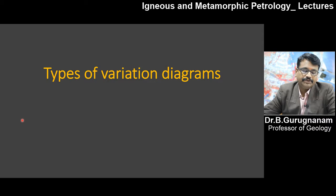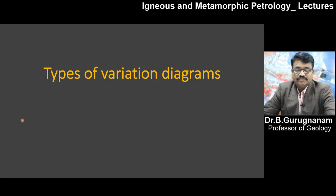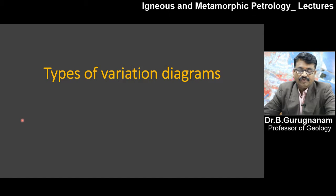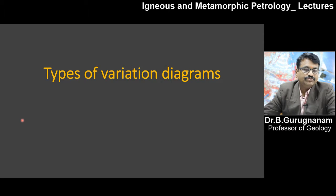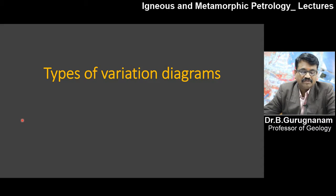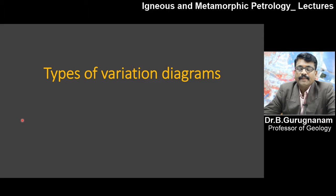Welcome back to a lecture series on igneous and metamorphic petrology. Since the last few classes, we have seen the general igneous rocks — how they are formed from magma, what the different types of magma are based on composition, what types of magma you will get, and what the end product of rock is. Igneous rocks are classified based on methodology, hand specimen, and chemical composition — including Tyrell, Staber, and IUGS classification. Today's class will discuss the types of variation diagrams involved in classifying rocks.